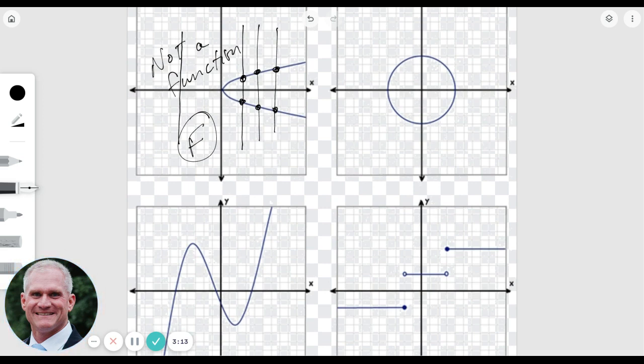How about this one? Well, you can see, same thing. We touch twice in multiple places. This also fails our vertical line test and is not a function.